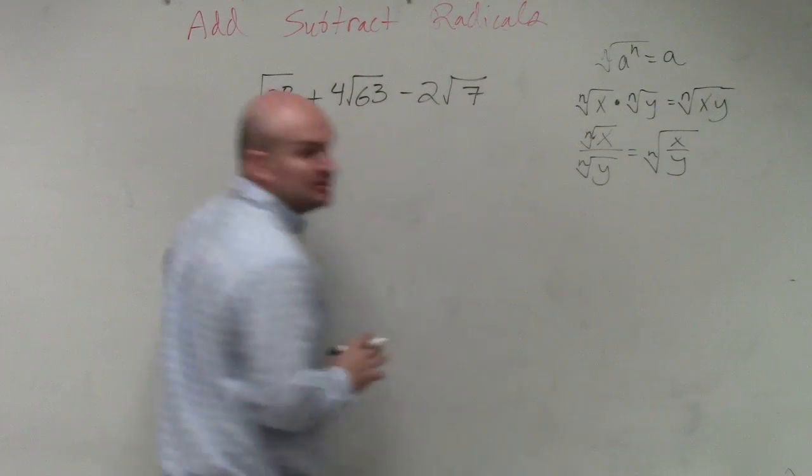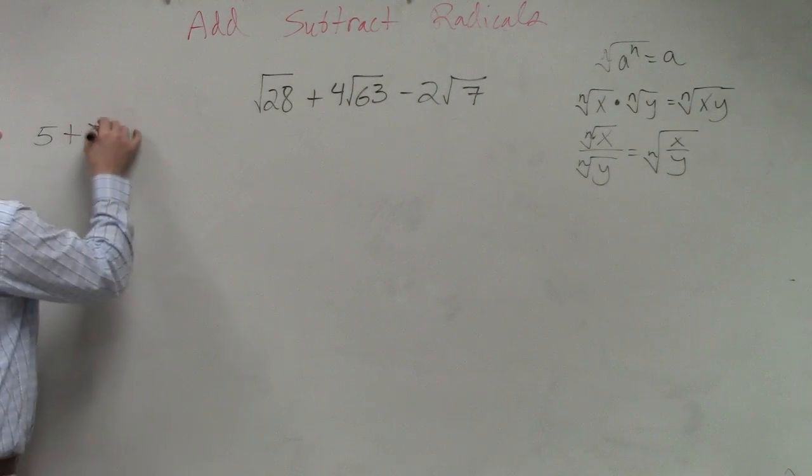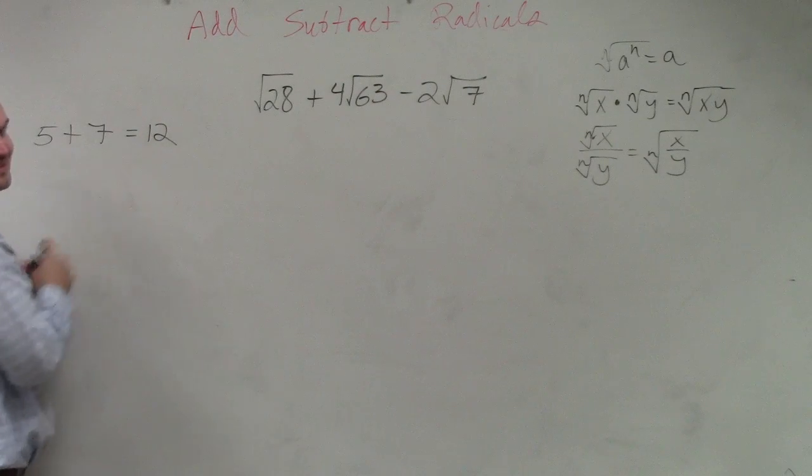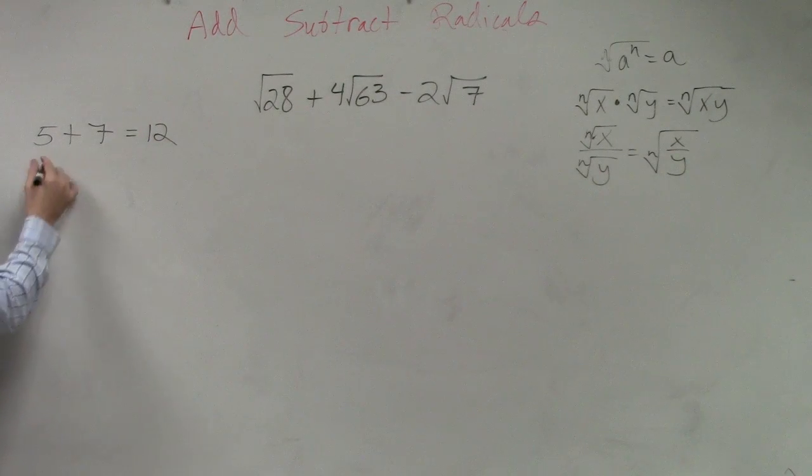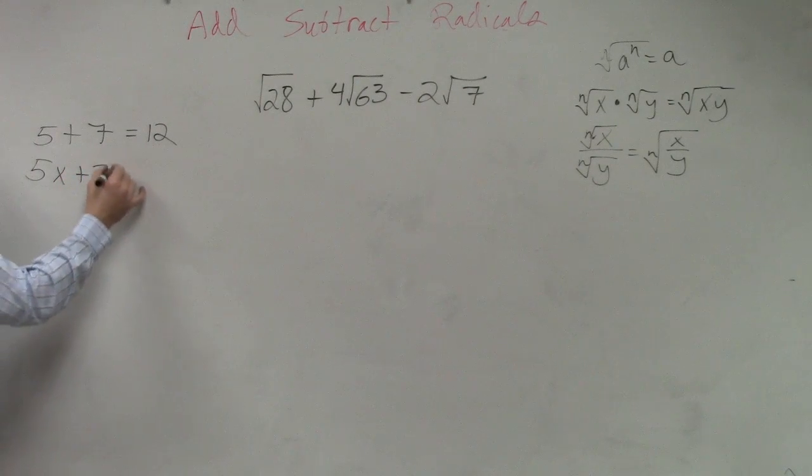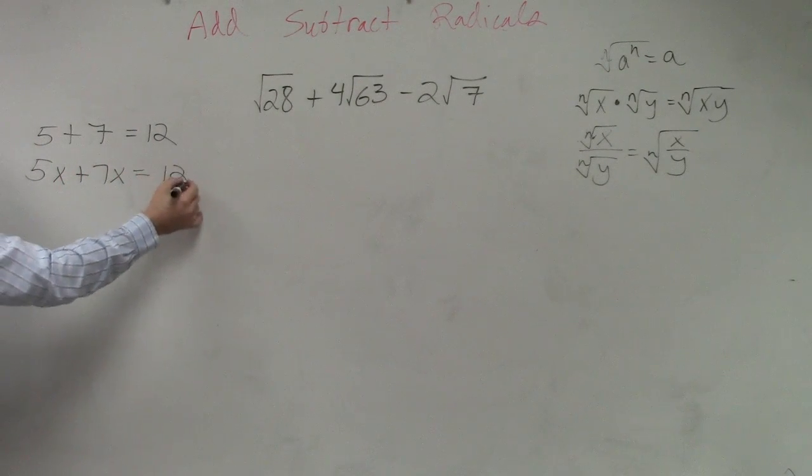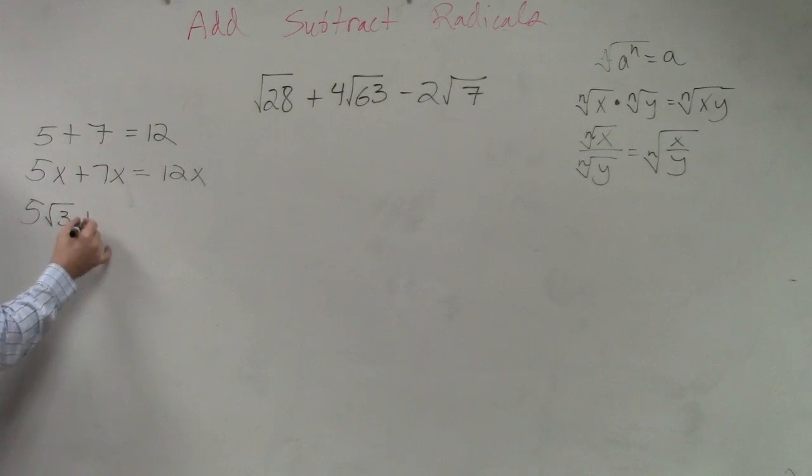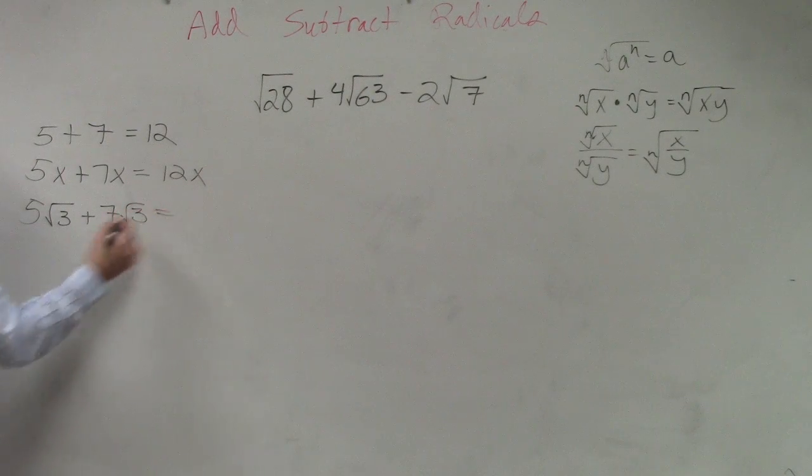So let me give you an example. 5 plus 7 equals 12, right? You guys are pretty good at that. All right, so now what about if I said 5x plus 7x? That equals 12x, OK? Now watch. 5 square root of 3 plus 7 square root of 3. Based on your knowledge, what do you think that would be?